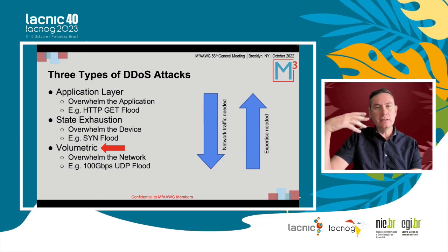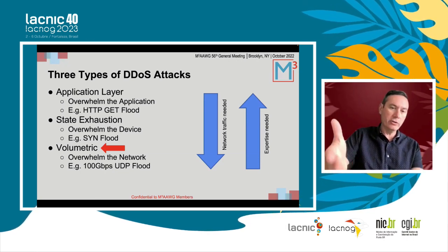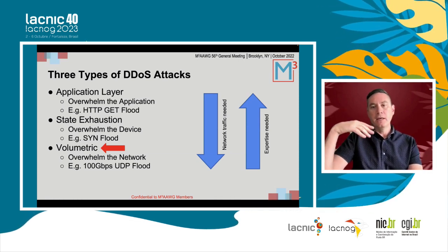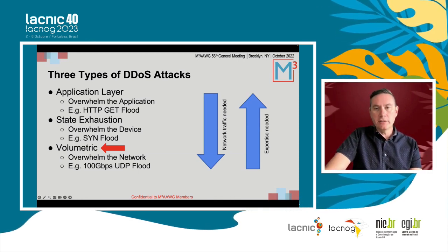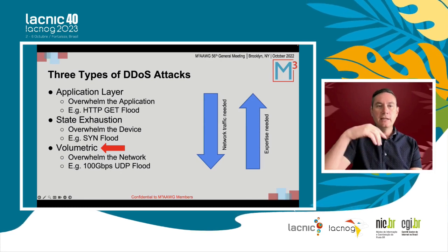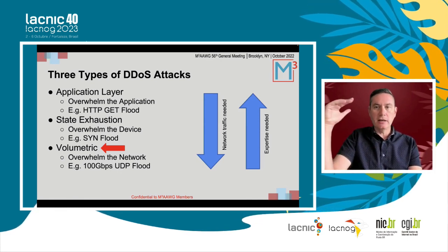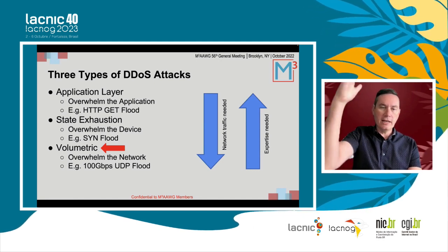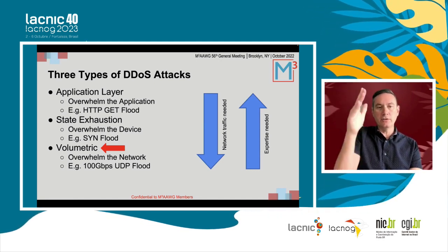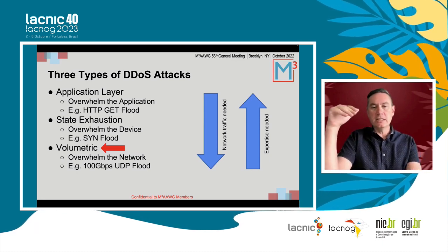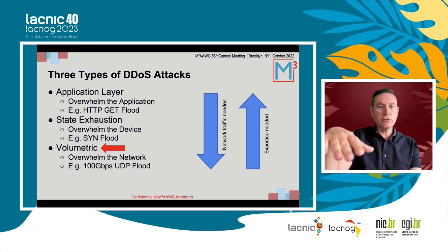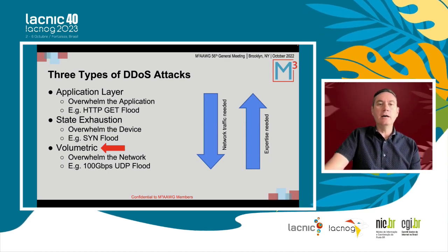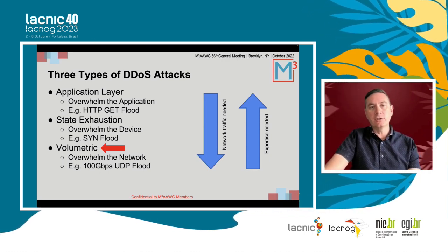An example of this is an attacker generating, say, 100 gigabits of UDP flood traffic. Application layer attacks generate less network traffic, while volumetric attacks generate more. The expertise needed is very easy for volumetric attacks, more difficult for state exhaustion, and even more difficult for application layer attacks.